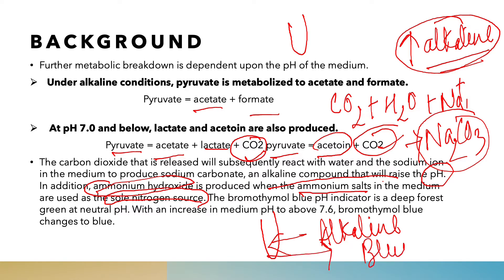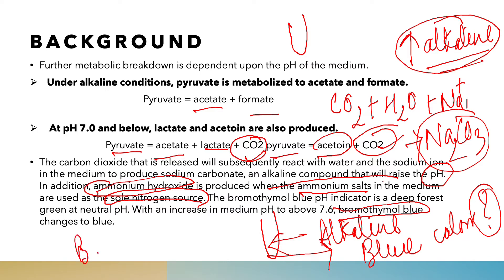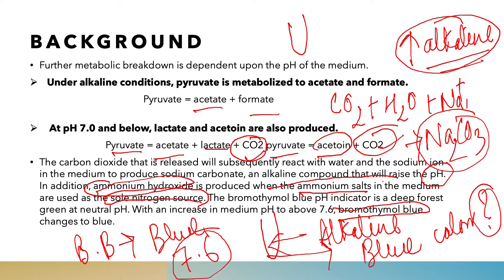When the pH of the medium is alkaline, the medium turns blue in color. It turns blue because there is an indicator called bromothymol blue, which turns from green to blue when the pH of the medium is around 7.6. So if bacteria grow on the Simmons citrate medium, the medium will be alkaline, and bromothymol blue will change its color from green to blue.